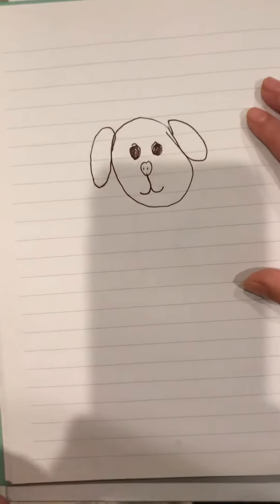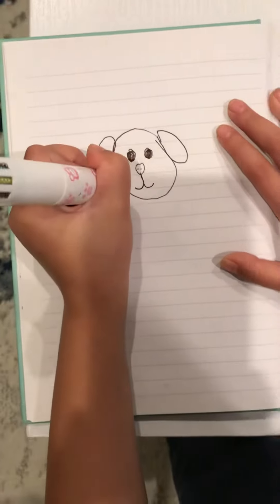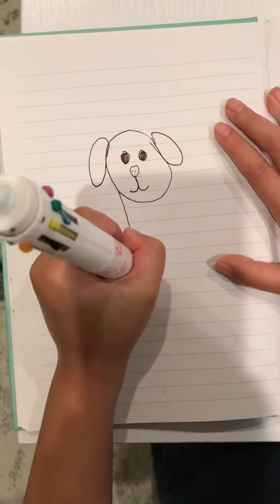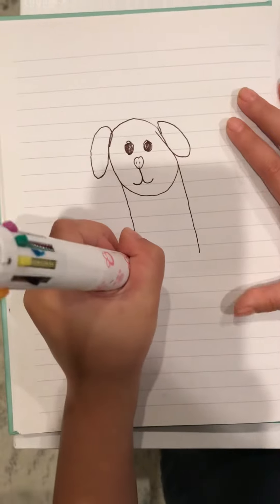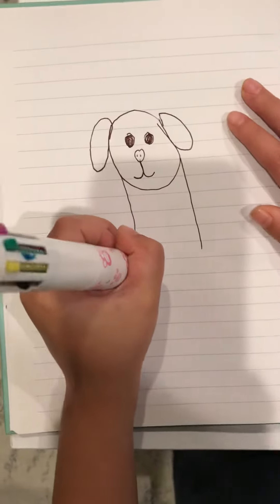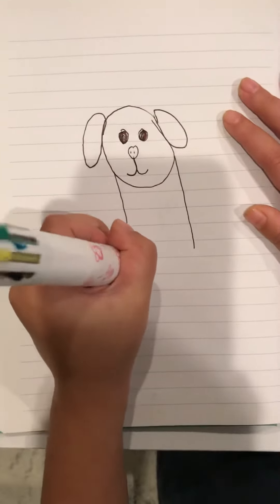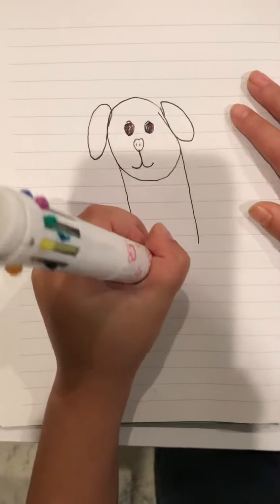Perfect. Then draw two lines that come out. Then draw two ovals for the legs like this.